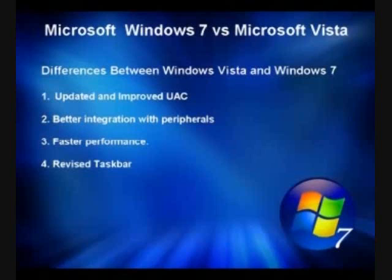In Windows 7, more drivers will be supported, and Microsoft has upgraded the display that pops up when a device is connected. Whereas Vista showed an AutoRun prompt, Windows 7 will give more options that are built specifically around the device. A connected camera, for example, may offer a link to its manufacturer's website to check for more software.